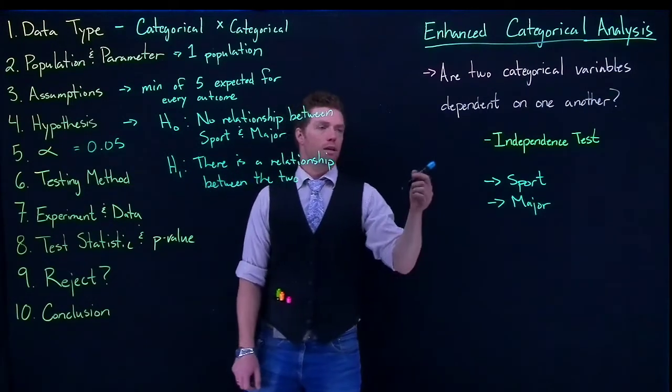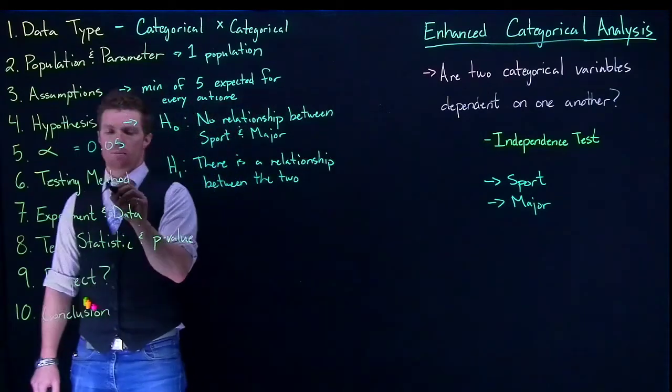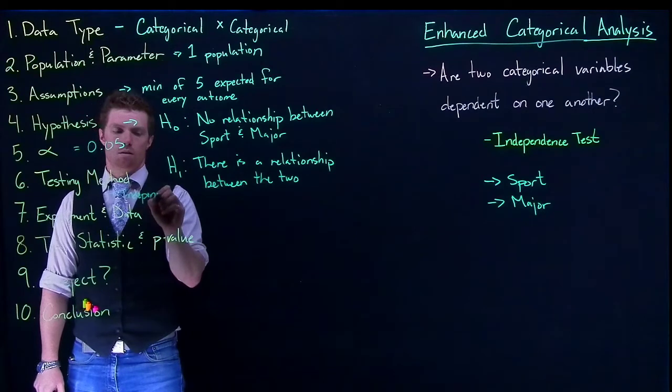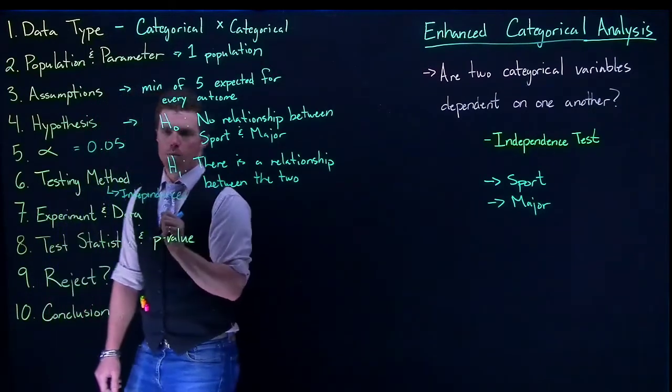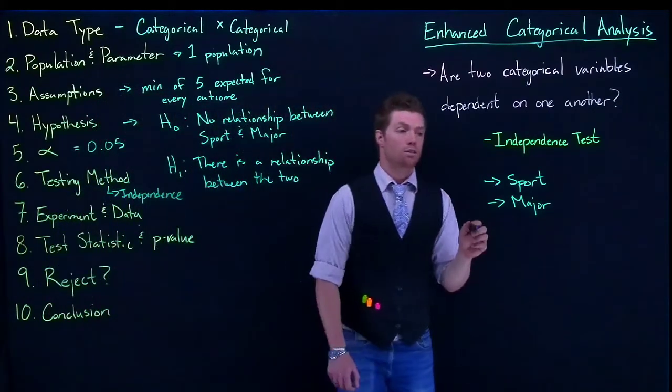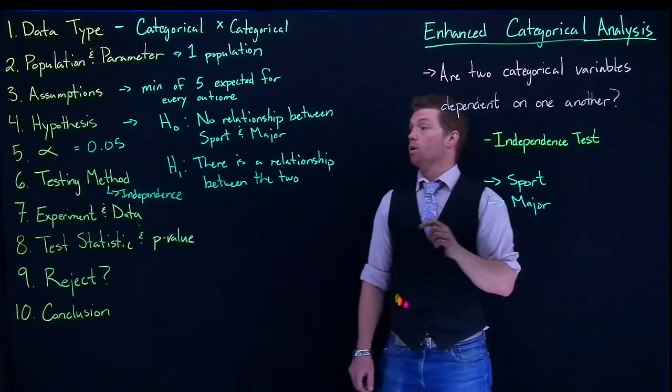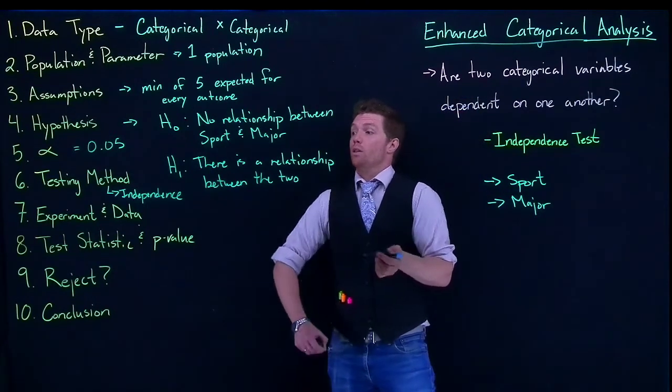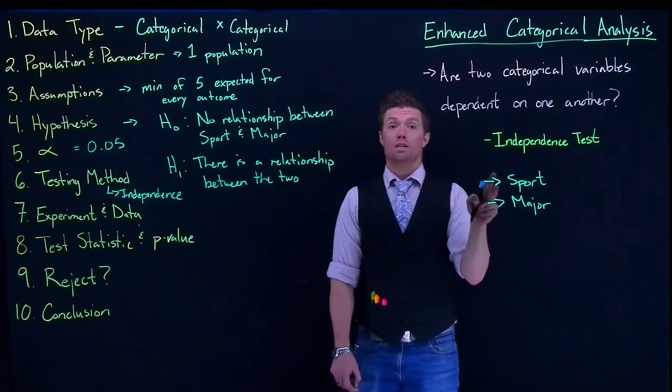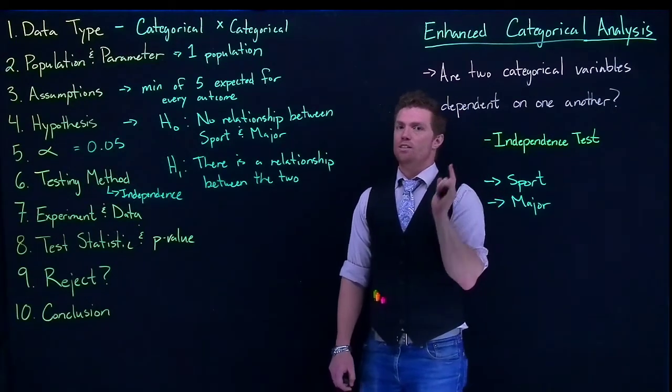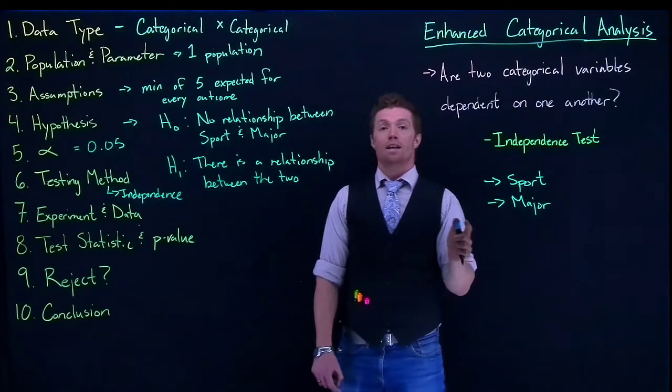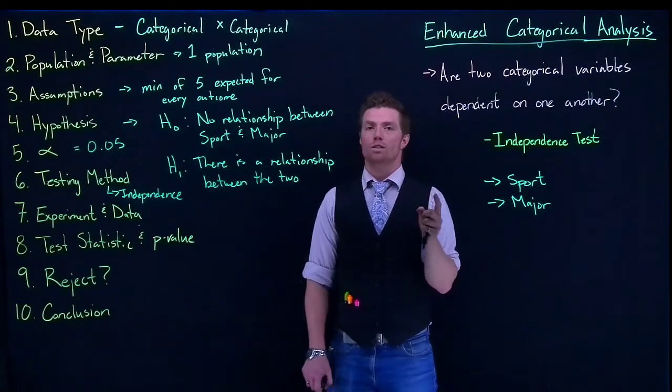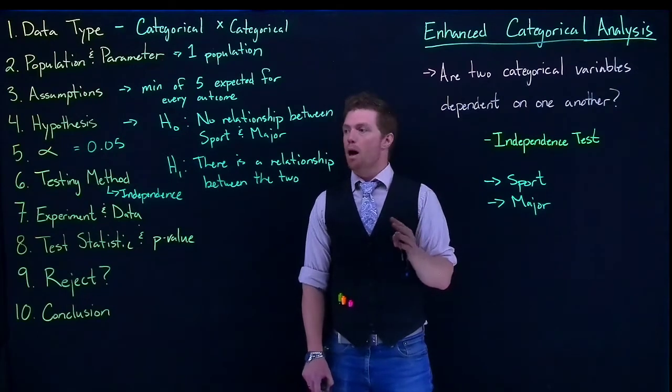Our testing method here is independence. Remember, the difference between independence and homogeneity is how many populations we're dealing with. Here we have two pieces of categorical data from a single population. In homogeneity, we have one piece of categorical data from multiple populations.